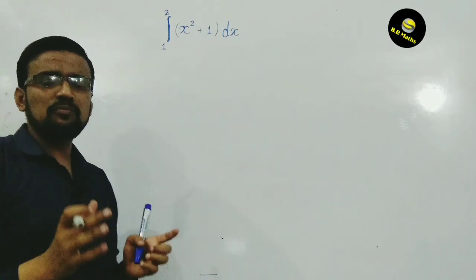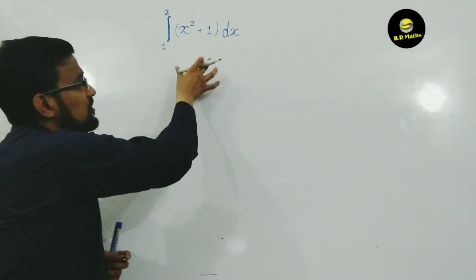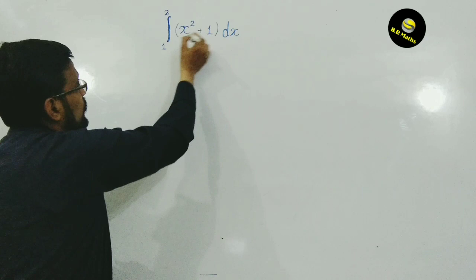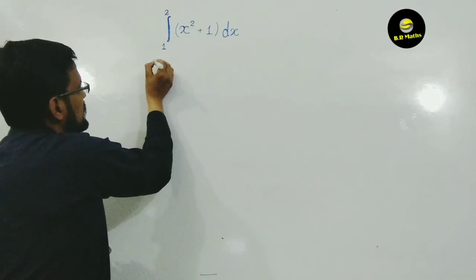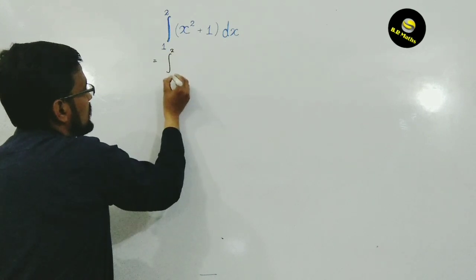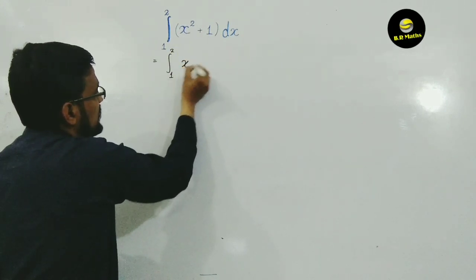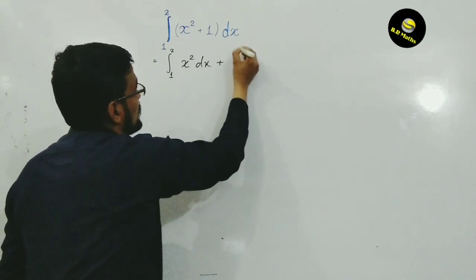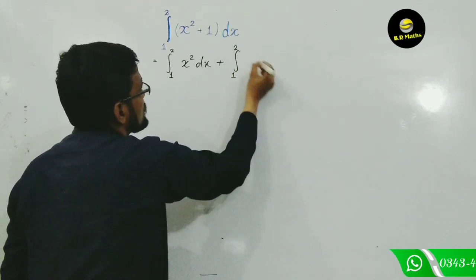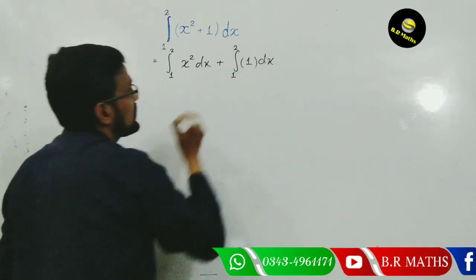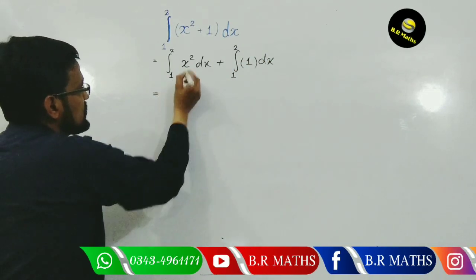According to my previous lecture on integration, how to find the integration? First, split this function integration into x square dx plus integration of 1 dx. So find the integration.